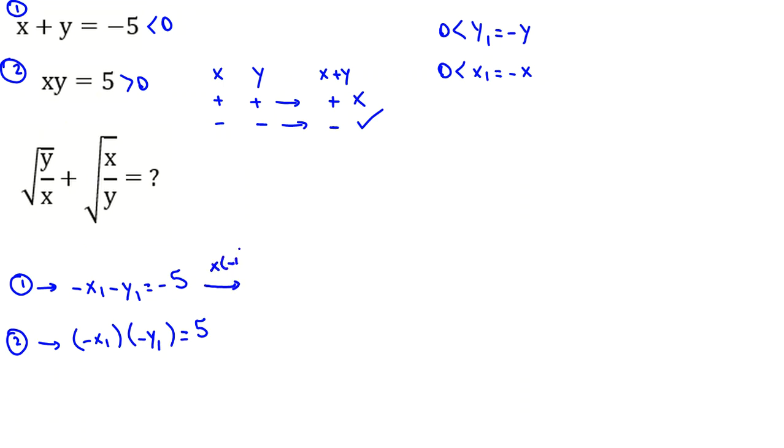So here, if I multiply by negative 1, then x1 plus y1 equal to 5. And here, x1 y1 will be 5. Now, if I consider this part A.